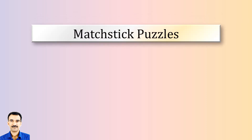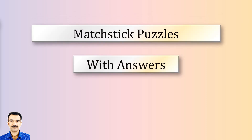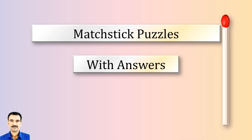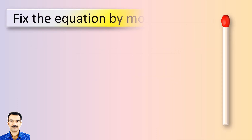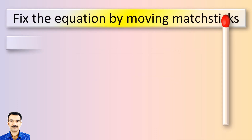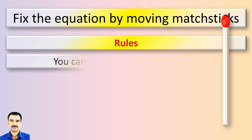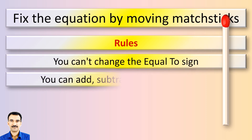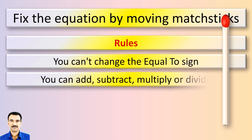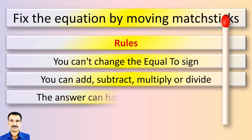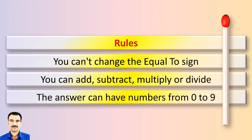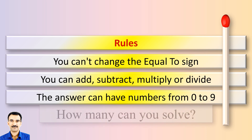Welcome to another video of Matchstick Puzzles with Answers. Please keep the rules in mind: you cannot change the equal to sign. You can add, subtract, multiply or divide. The answers can have numbers from 0 to 9. How many puzzles can you solve?